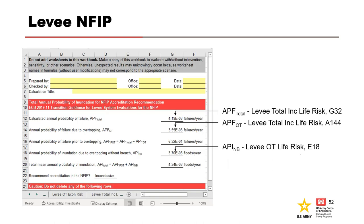The total annual probability of inundation for NFIP accreditation worksheet requires no user input. It pulls information from the levee total incremental life risk and levee overtopping life risk worksheets. The calculated annual probability of inundation is used to determine the yes, no, or inconclusive NFIP accreditation recommendation as described previously.